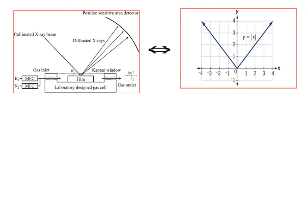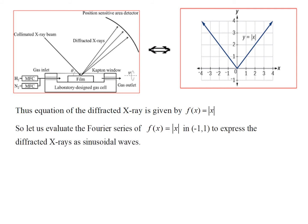Here, what exactly are they asking? Given this particular sample of x-ray diffraction, they have asked us to convert the diffracted rays into sinusoidal waves. First, observe the path of the diffracted rays in the picture. Can you identify to which graph it is equivalent? We need to first identify the function which we need to represent as sinusoidal. This is the graph of the function y equal to modulus x. So the diffracted x-rays are represented by f of x equal to modulus x. Our work now is to find the Fourier series of mod x in the interval minus 1 to 1.